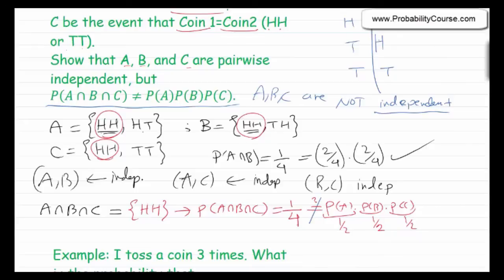The key lesson in this video is that if events A, B, and C are independent, then the probability of A and B equals probability of A times probability of B, and the probability of A and B and C equals probability of A times probability of B times probability of C. In other words, independence means we can multiply the probabilities of intersections.